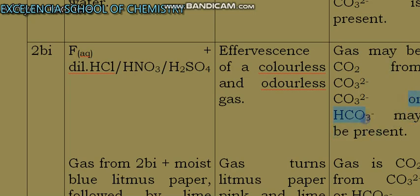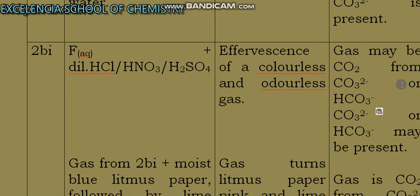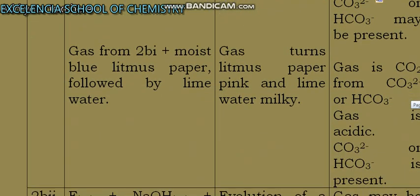You now have to say that trioxocarbonate(IV) or hydrogen trioxocarbonate(IV) may be present. You now test it, testing it with lime water and the litmus paper, and you make the usual observation.